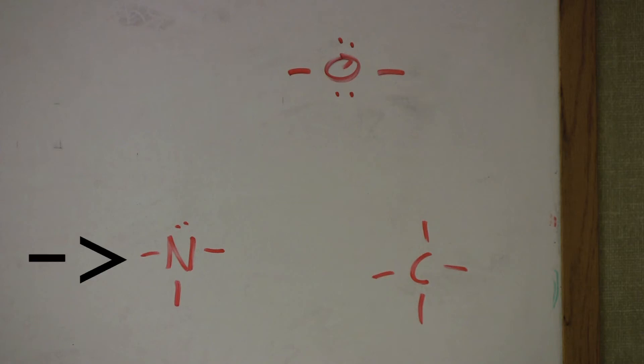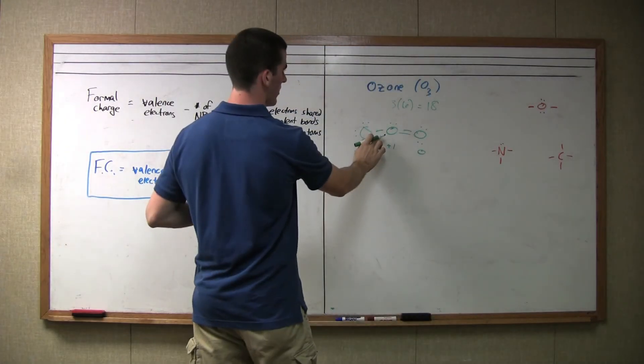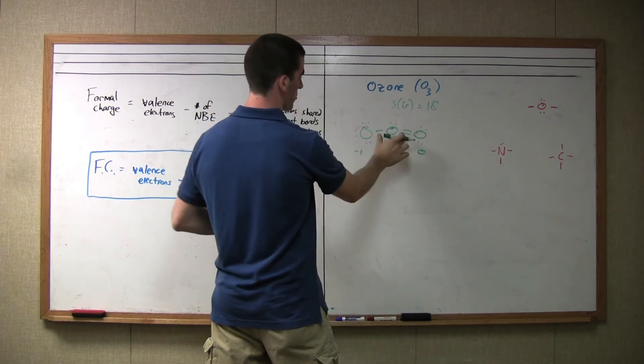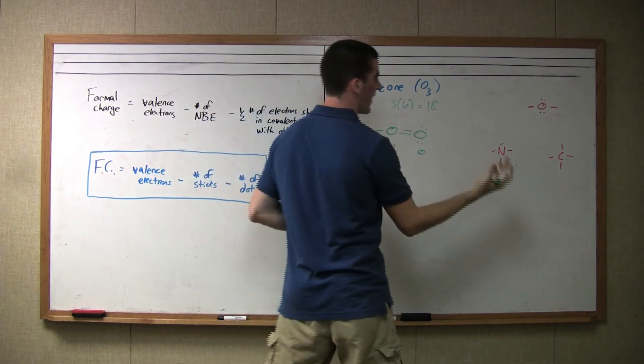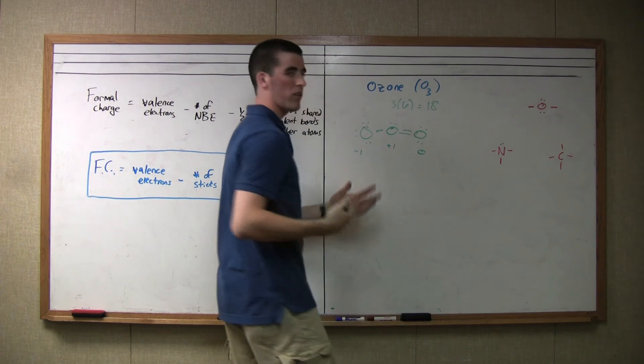Same thing with nitrogen or anything else in that column. It's normally bonded to three things. If you see things, oxygen is bonded to only one atom or bonded to three or have three bonds, then it should catch your attention and you should say, okay, there's a formal charge here.